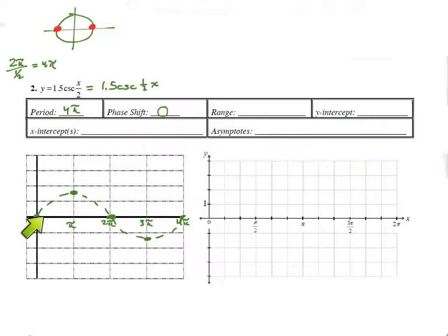Actually, I should say it's where sine, or 1.5 sine—1.5 actually doesn't have anything to do with it, but the 1 half times x, because there's a 1 half times x, that changes where sine equals 0. So these are the three spots where sine equals 0.